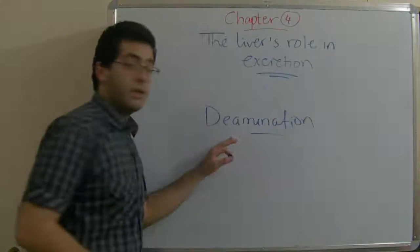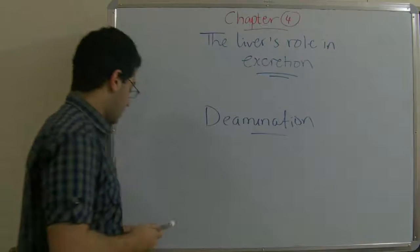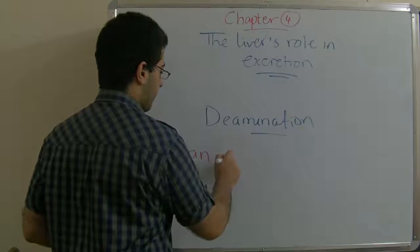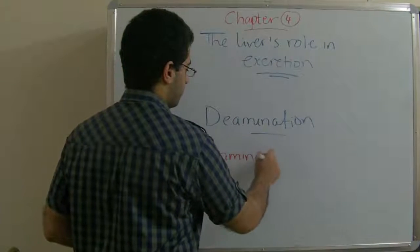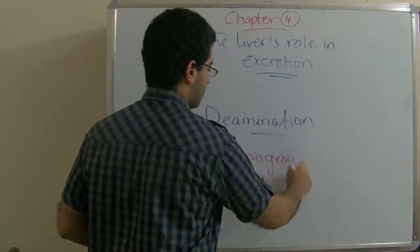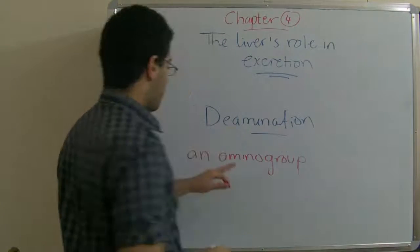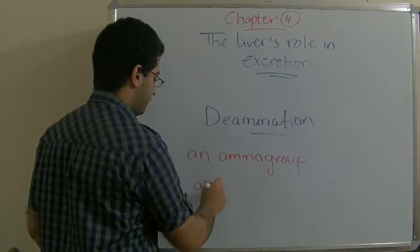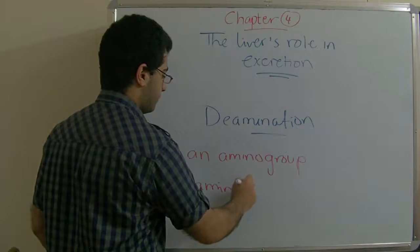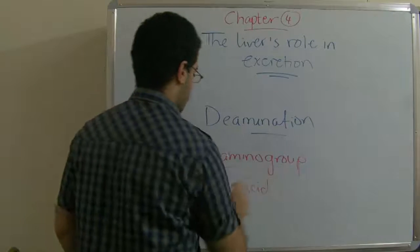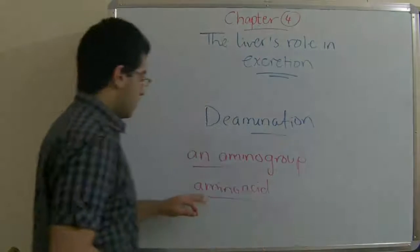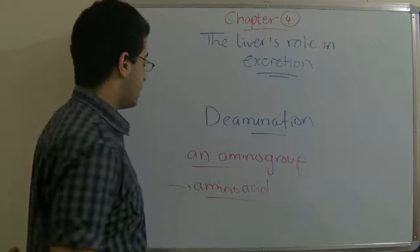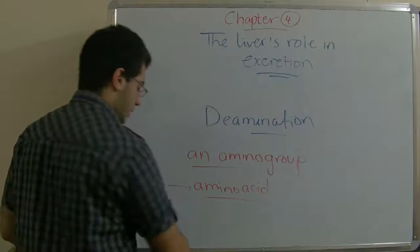The process of deamination is the process in which an amino group is taken from a molecule or is taken from an amino acid. This excess group of amino acid is changed into ammonia.